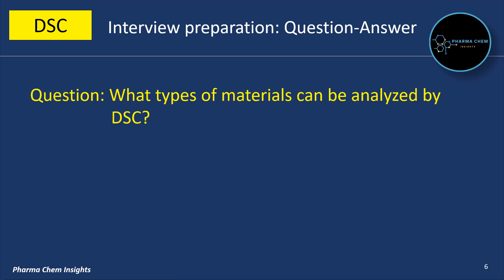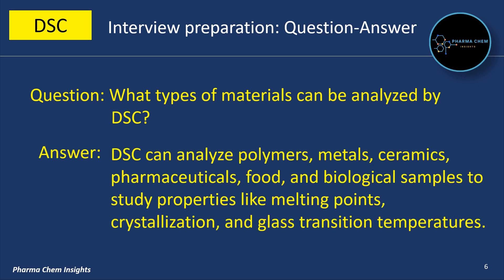Next question: What types of materials can be analyzed by DSC? DSC can analyze polymers, metals, ceramics, pharmaceuticals, food, and biological samples to study properties like melting points, crystallization temperature, and glass transition temperature.